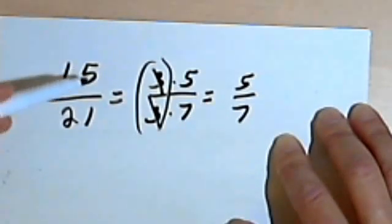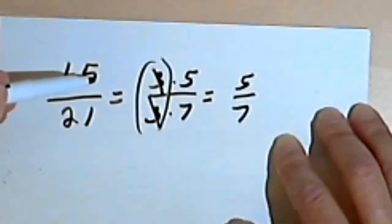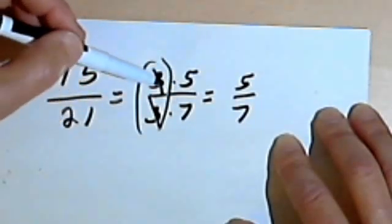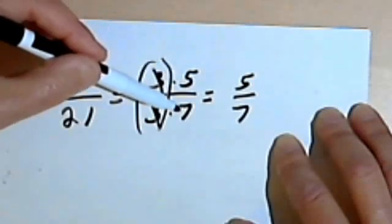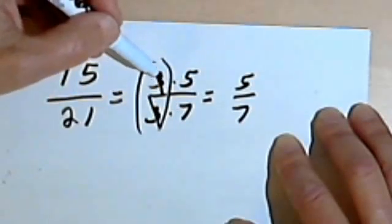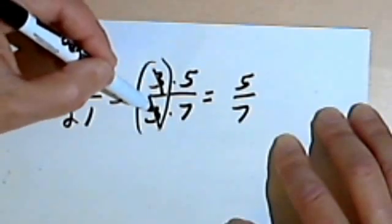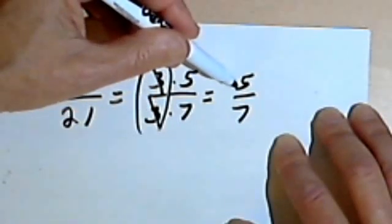I'm going to be left with 5 over 7. So instead of thinking of yourself as dividing both of these by 3, you can think of breaking the numbers down into the numbers that are multiplied to make them. Then just cross out anything that's the same in the numerator and the denominator.